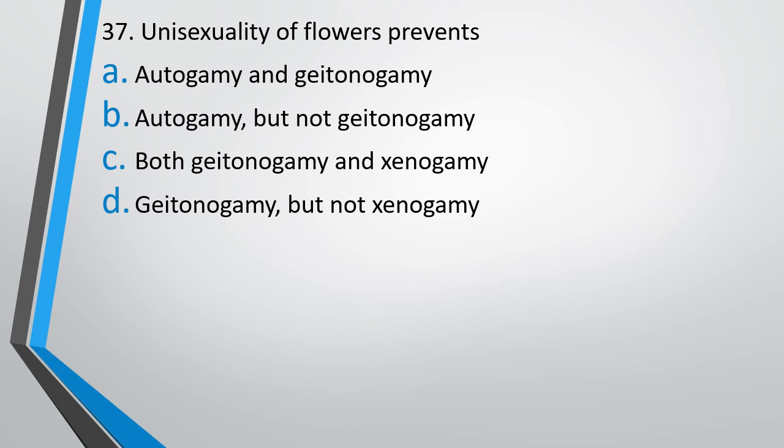Question number 37. Unisexuality of flower prevents autogamy and geitonogamy, autogamy but not geitonogamy, both geitonogamy and xenogamy, or geitonogamy but not xenogamy. The correct answer is option B, it prevents autogamy but not geitonogamy.